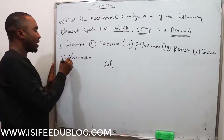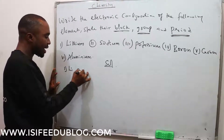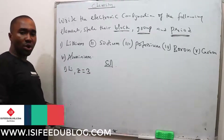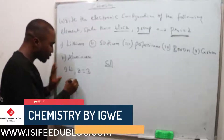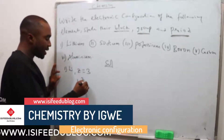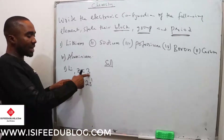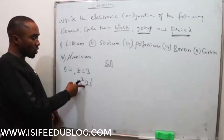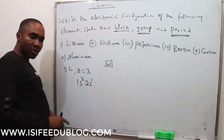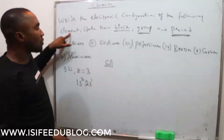Number one: Lithium. The atomic number of lithium is 3. We write the electronic configuration: 1s² 2s¹. If you add 2 plus 1, that is 3. So the electronic configuration of lithium is 1s² 2s¹. That answers the first part of the question.